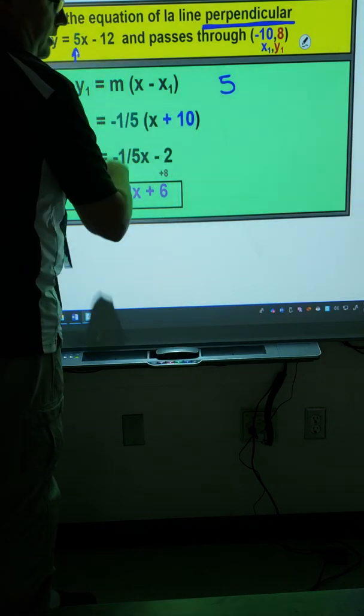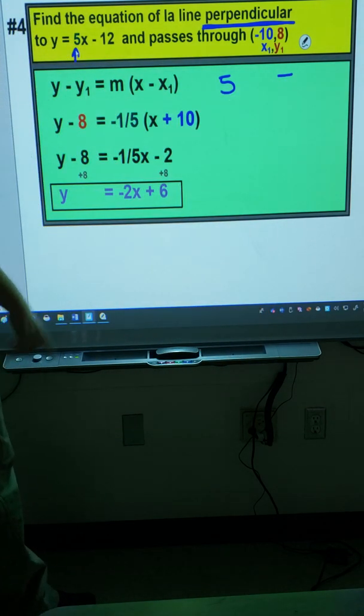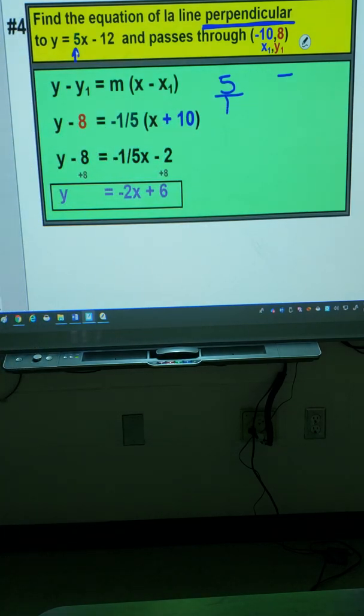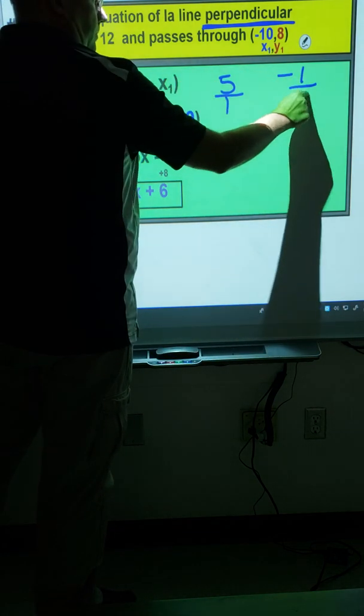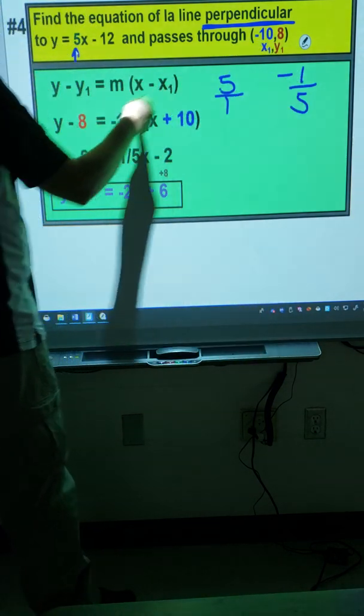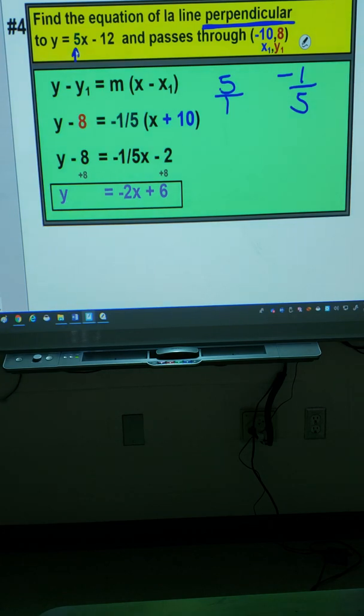Now if it's not a fraction, it's kind of difficult to flip it in the first place anyway. So put it over 1. Kind of like what you do with slope. A slope of 5 means you go up 5 and across 1. So same idea. Flip. Change the sign. And that's why we have negative 1 fifth here as my slope.